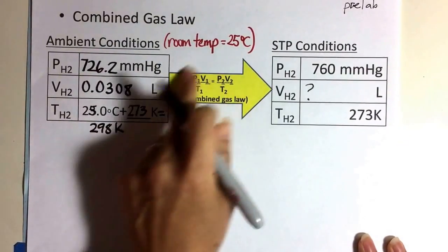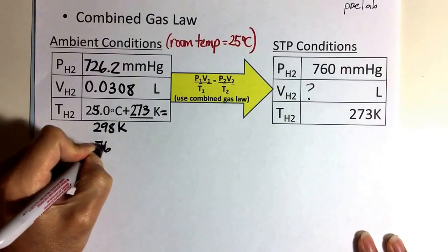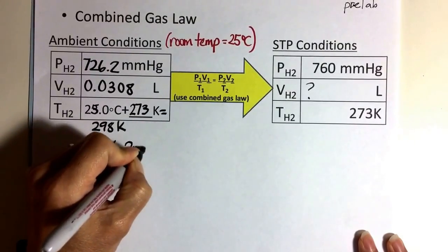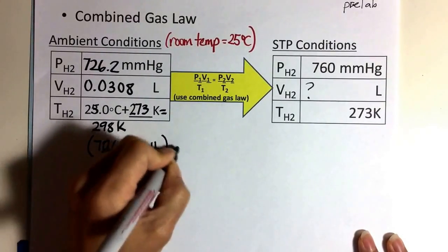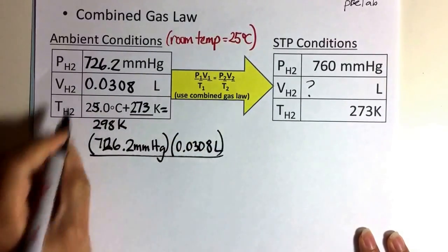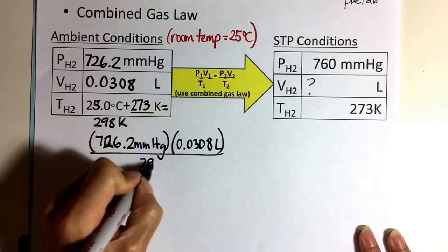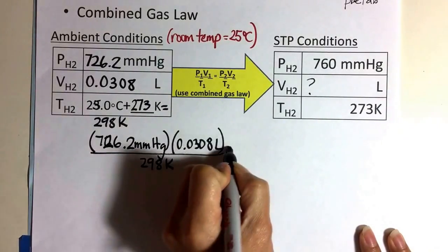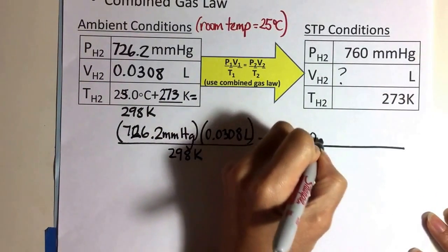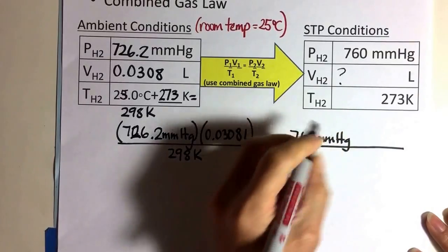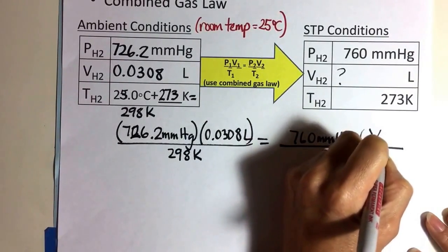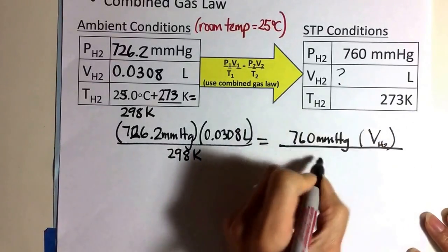So setting up the combined gas law, which is right here, P1V1 over T1. And then I'm going to ratio it to STP conditions, which is 760 mmHg. And then volume is what I'm looking for. So the volume at STP conditions, volume hydrogen gas, and then 273.